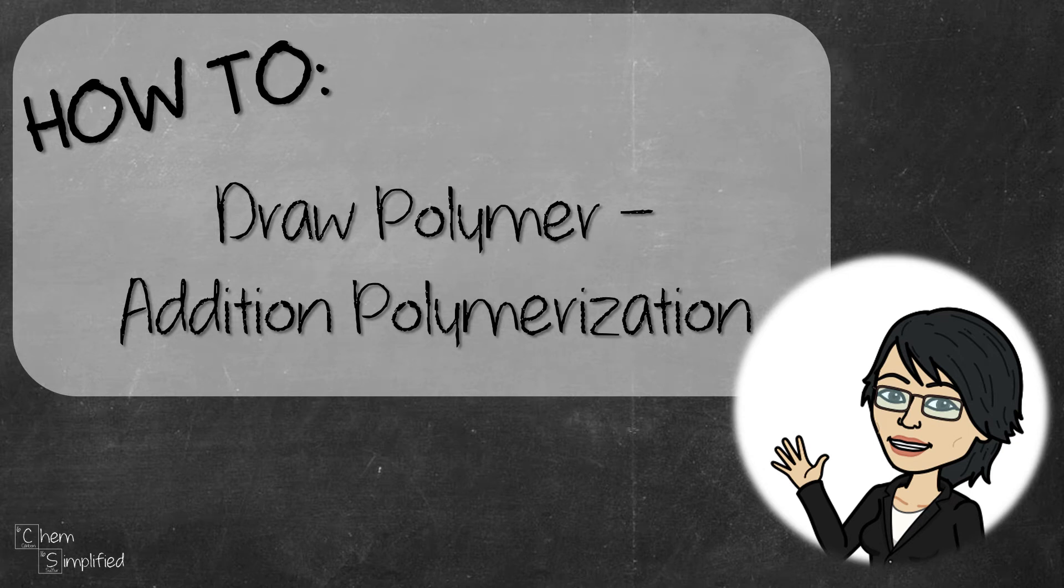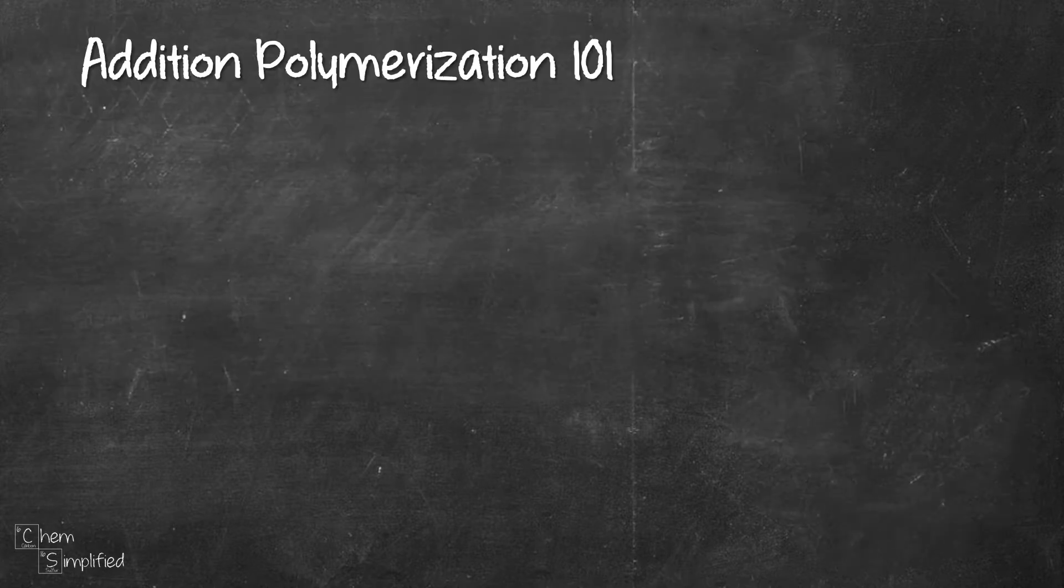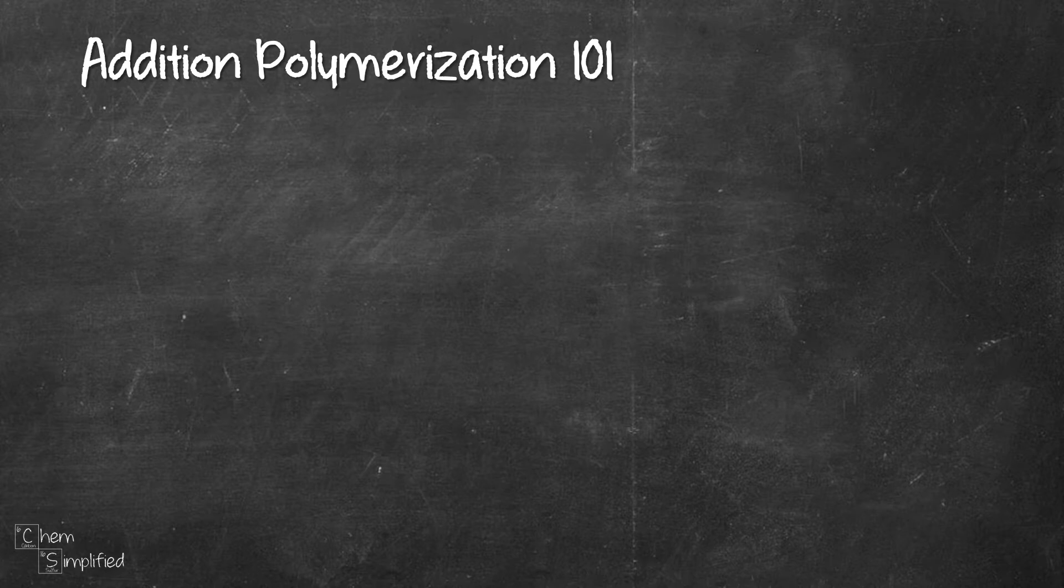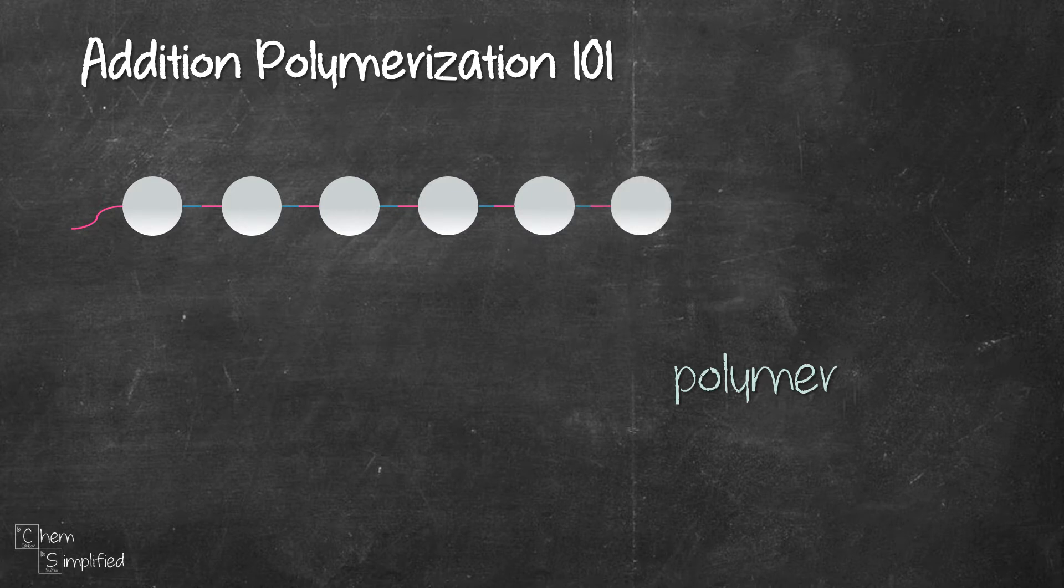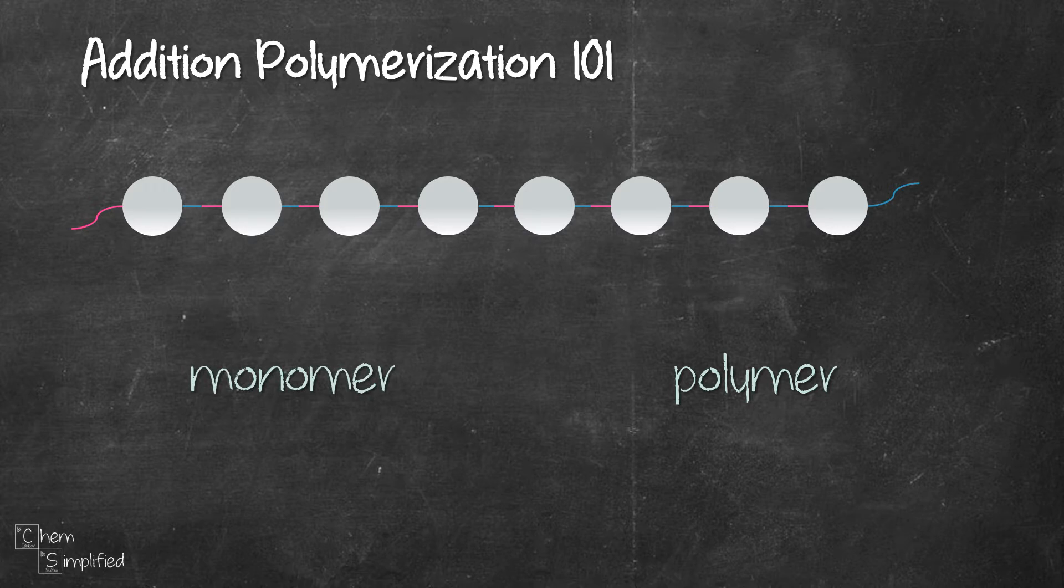In this video we're going to go through how to draw polymers made through addition polymerization. Just a quick intro to addition polymerization. A polymer is like a beads necklace. It's made out of lots of beads linked together like this. Those beads are called monomers. And the process of making this necklace is called addition polymerization.